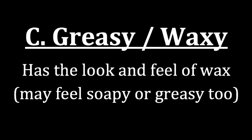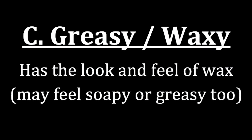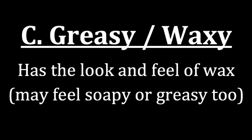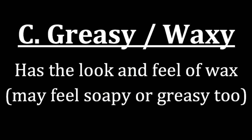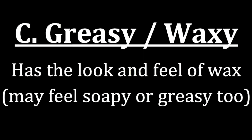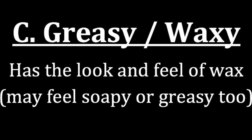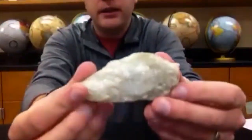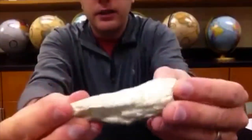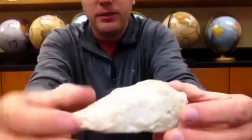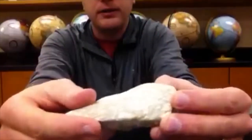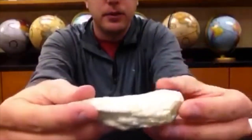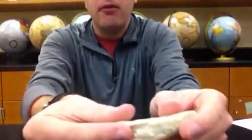The third of the non-metallic lusters is greasy or waxy. This has both the look and the feel of wax, and it may also sometimes feel soapy or greasy. When we look at minerals with this luster, we can see it looks kind of greasy — it doesn't really have a shine, but you see the light wax across the surface, which is another origin for the name. When you feel it, it is soapy to the touch.